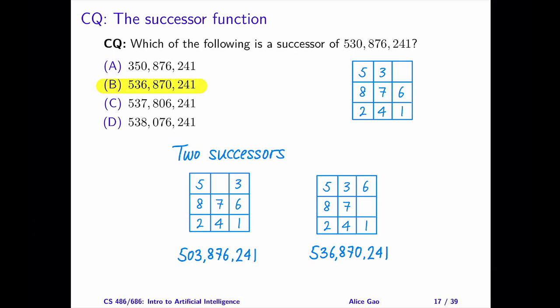The correct answer is B. We can derive this successor by moving 6 upward. To answer this question, we can draw the state as a 3 by 3 grid. Draw the grids for the successors, and then write each of its successors as a 9-digit string.